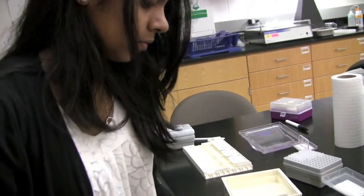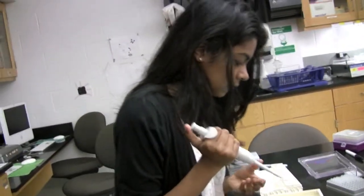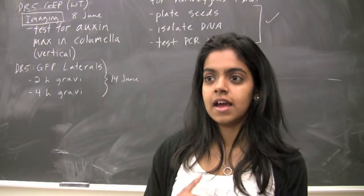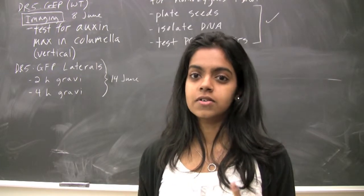From prior work, we know that when plants are grown in low phosphate conditions, the primary root growth is supposed to be stunted and the lateral roots grow denser.